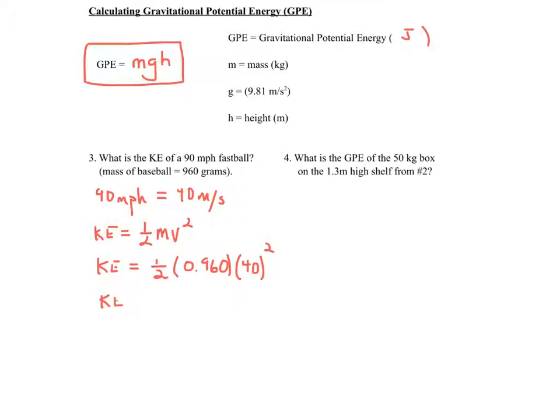All right, so that's just, you go to your calculator, plug those numbers in. And you get 768 joules. I'm just going to round off to two sig figs. 770 joules of kinetic energy.